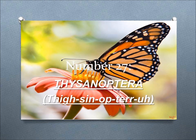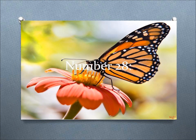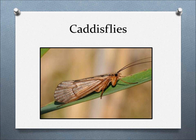Number 27, Thysanoptera. This order includes thrips, tiny slender insects with fringe wings that feed on a variety of sources by puncturing them and sucking up the contents. Number 28, Trichoptera. This order includes caddisflies, insects that as larvae are usually aquatic and use silk to construct nets or tubes.